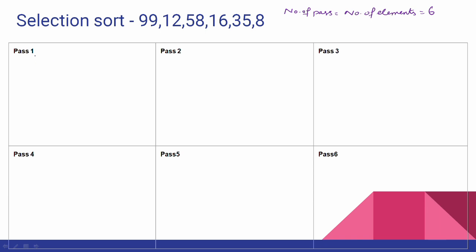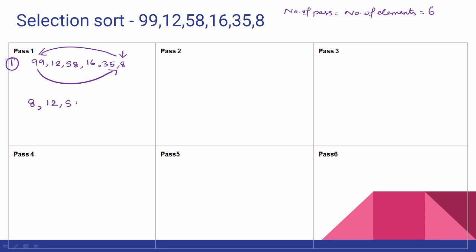First pass: input is 99, 12, 58, 16, 35, 8. The minimum element is 8. In the first pass, we replace the first element with 8. The result of the first pass is: 8, 12, 58, 16, 35, 99.